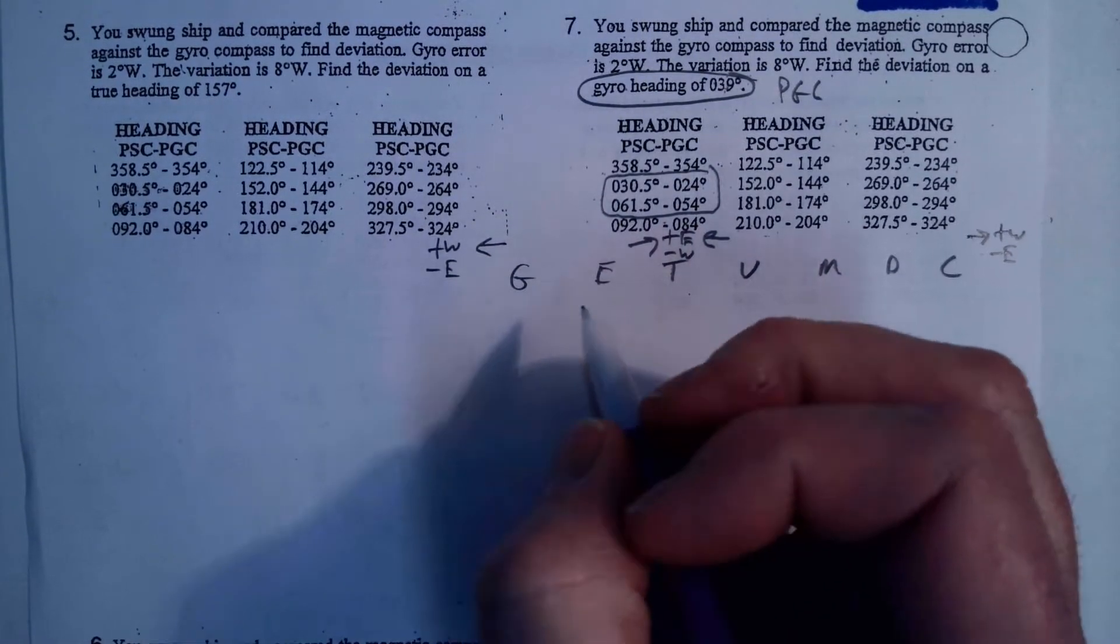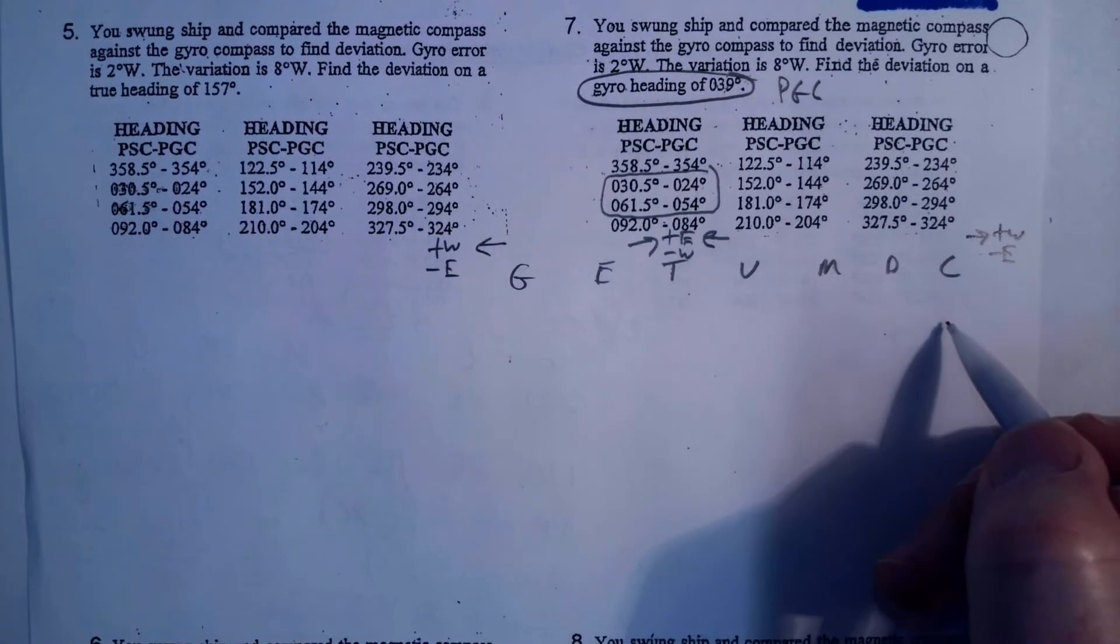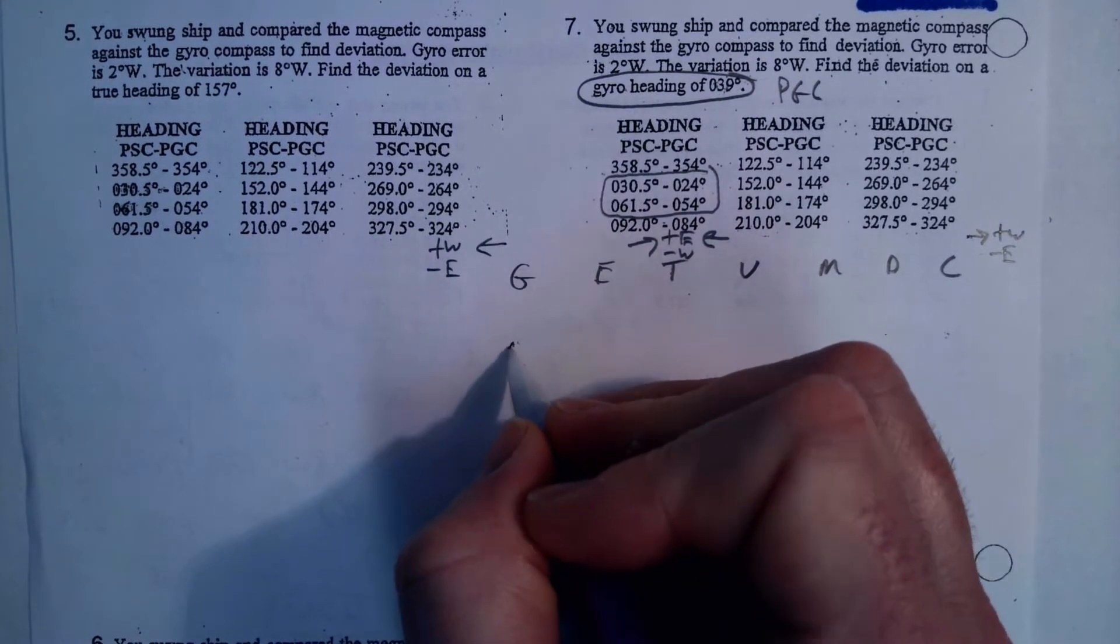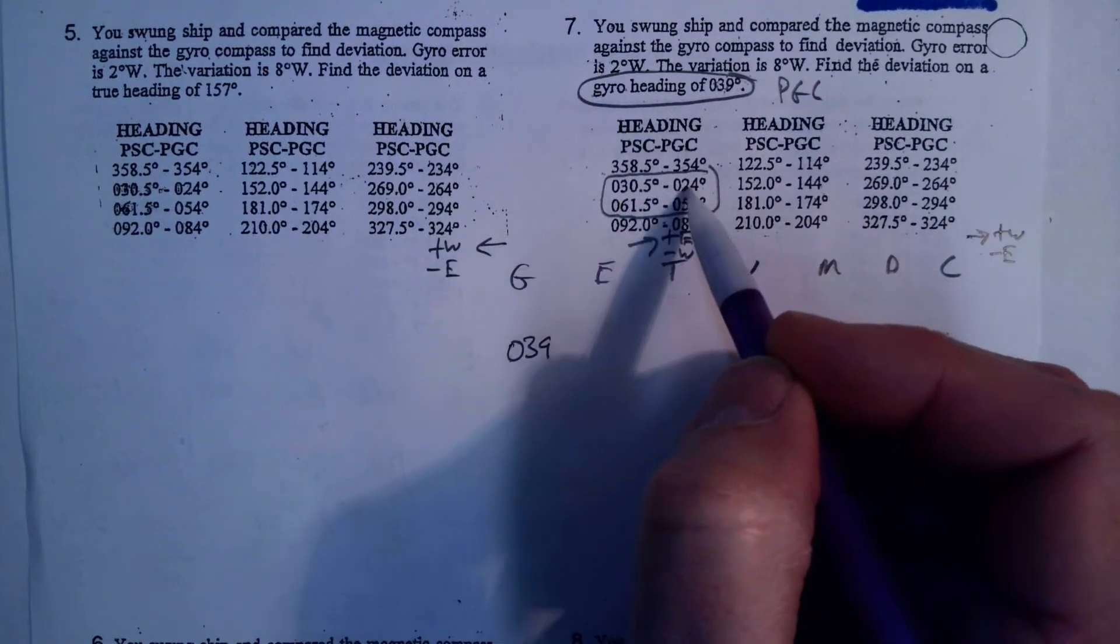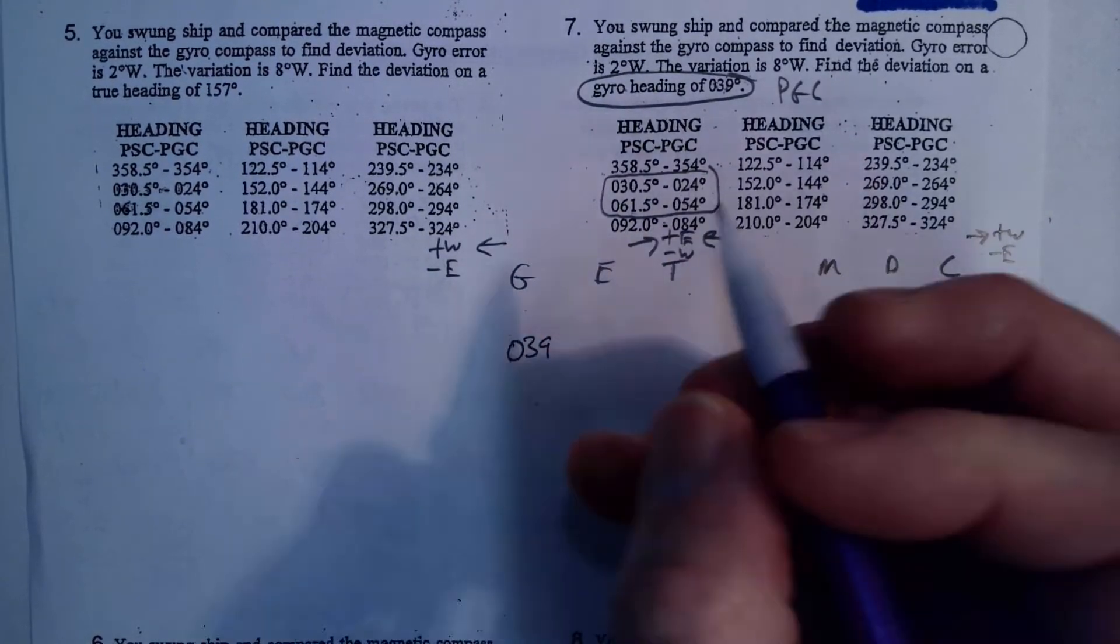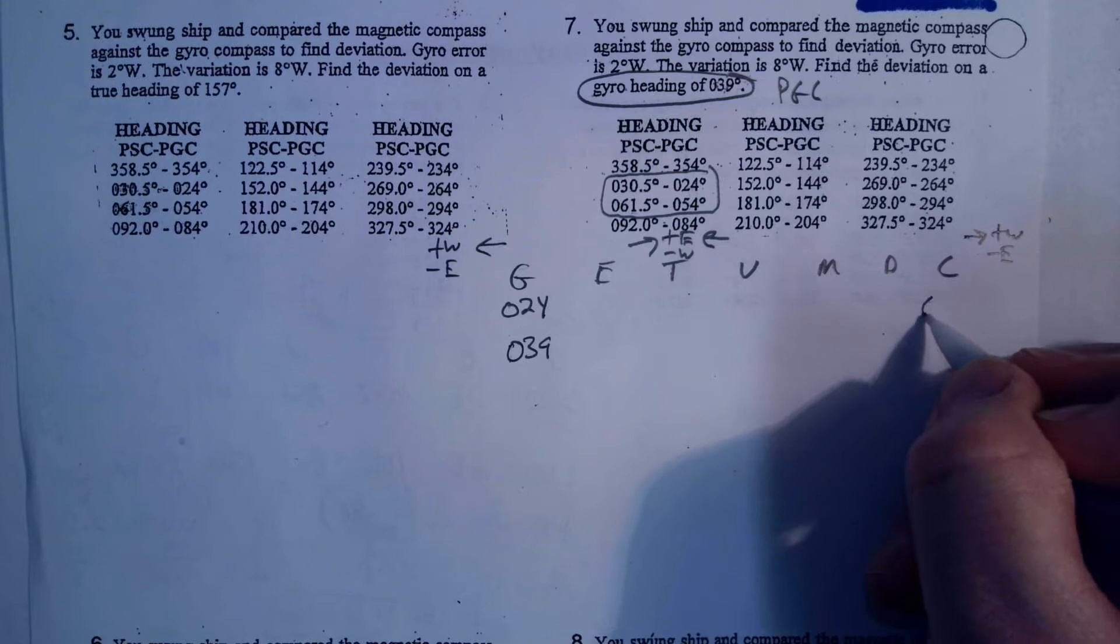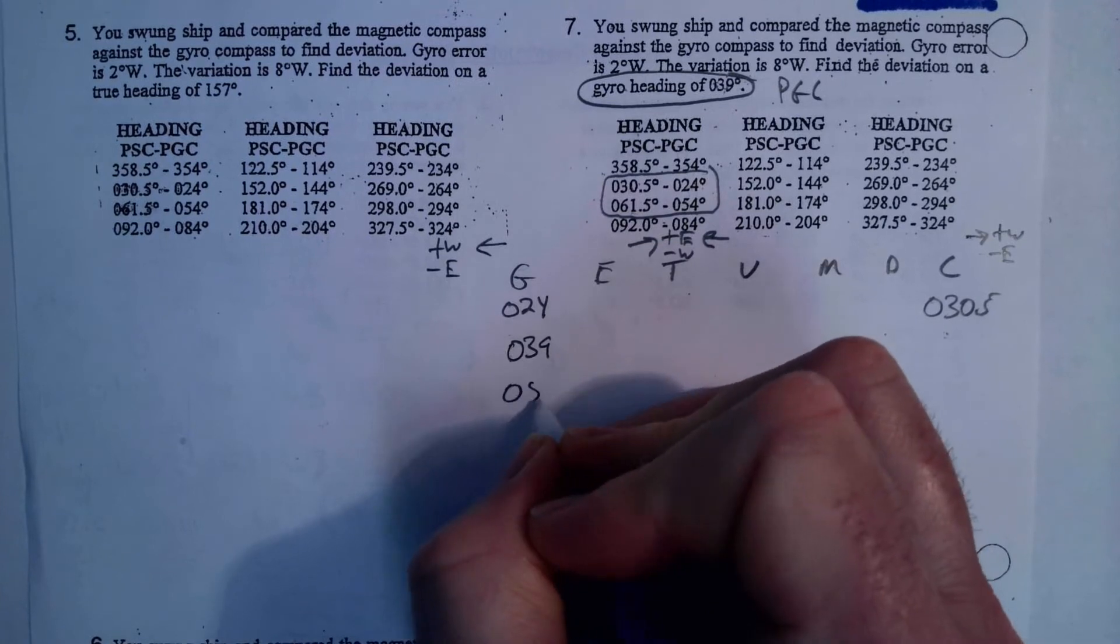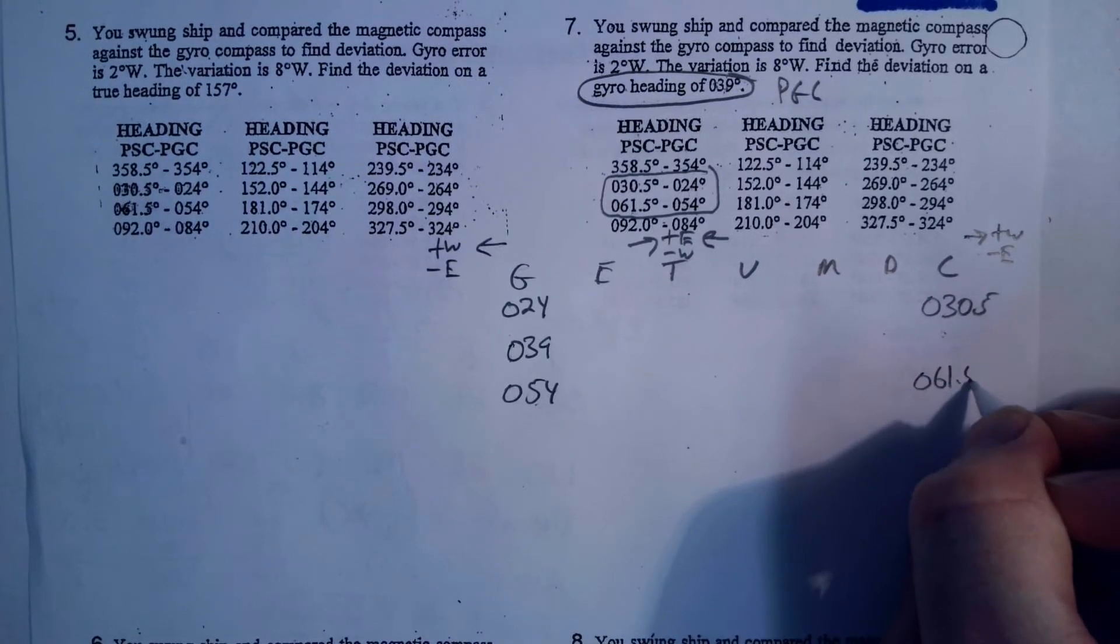Now, what I'm going to do here, the 039 goes over here. If I was doing a magnetic heading, if they gave me PSC, that number would go over here. But because they gave me a gyro heading, it goes over here. So, this is 039. And then, the PGC, this is the first pair, this is the second pair. I'm always going to put the top pair on the top and the bottom pair on the bottom. So, this is 024, and 030.5 goes over here. And then 054, and the PSC is 061.5.